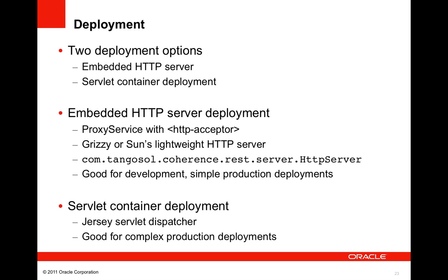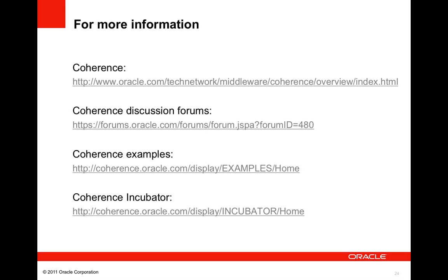The second deployment option is deploying the Jersey servlet dispatcher to a full-fledged J2EE servlet container such as Jetty, GlassFish, or WLS. This approach is good for complex production deployments where additional J2EE services such as security are required. Regardless of the approach, be sure to disable distributed cache data storage in your proxy server or web container JVM. This concludes the presentation of the new Coherence REST API. Here are a few links for more information on Coherence 3.7.1. Thanks for watching the Coherence Screencast Series.